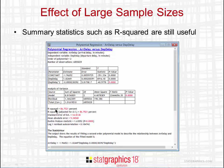Also useful is the R-squared statistic here, showing that the model has explained about 86.75% of the variability in arrival delays. Things like the standard error of estimation, the mean absolute error, the Durbin-Watson statistic, and so forth, are all still useful with large data.